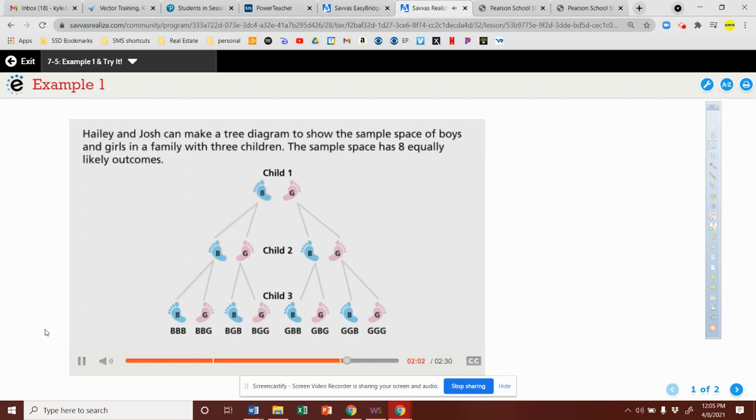Hailey and Josh can make a tree diagram to show the sample space of boys and girls in a family with three children. The sample space has eight equally likely outcomes.